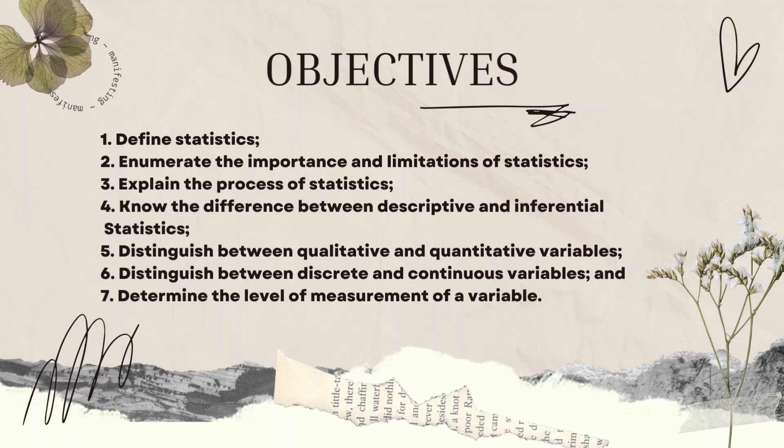Our objectives or our goal for this chapter: at the end of the discussion, you students should be able to define statistics, enumerate the importance and limitations of statistics, explain the process of statistics, know the difference between descriptive and inferential statistics, distinguish between qualitative and quantitative variables, distinguish between discrete and continuous variables, and lastly determine the level of measurement of a variable.